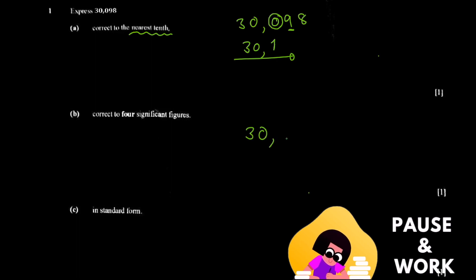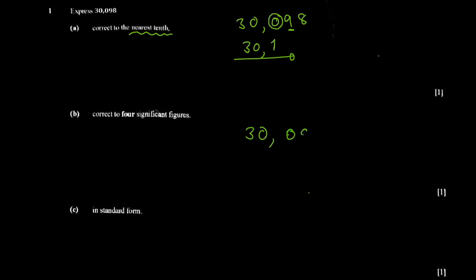When dealing with significant figures, you have to identify the first significant figure, which is the first non-zero digit in a number. In this case it's obviously three. If it were 0.098, the first non-zero digit would be nine — that would be the first significant figure. You want to express the number to four significant figures, so you'll be looking for the fourth significant figure. In decimals, all numbers after the first significant figure are significant.